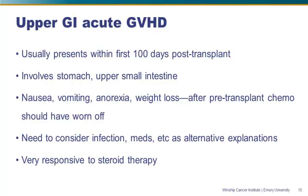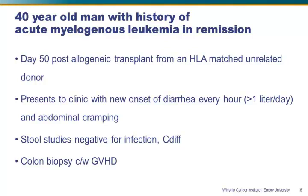Back to our 40-year-old patient. In this scenario, he's 50 days after his allogeneic transplant, and he presents with new onset of voluminous diarrhea. We ask patients to save their stool because we gauge how sick a person is and how they're responding to therapy by the volume of diarrhea they're having — knowing whether it's a liter, a liter and a half, or two liters gives us an important idea of how we're doing. He also has abdominal cramping, infectious workup is negative, and a colon biopsy is consistent with graft-versus-host disease.